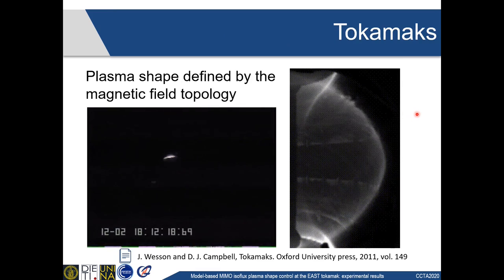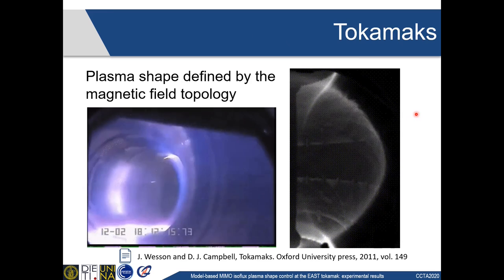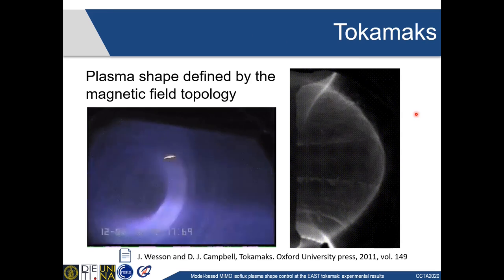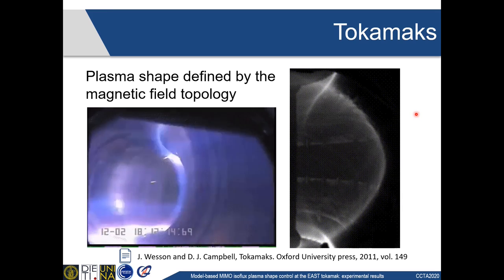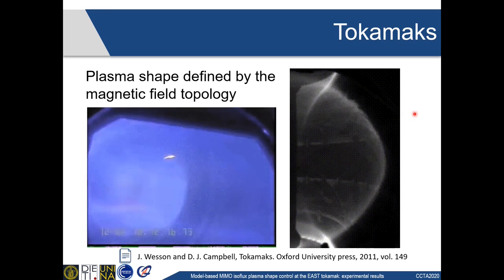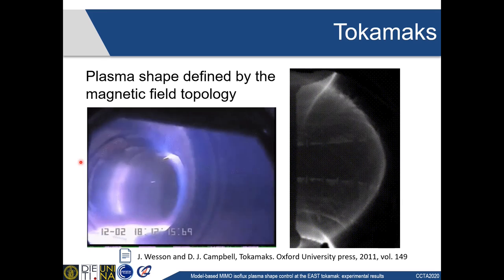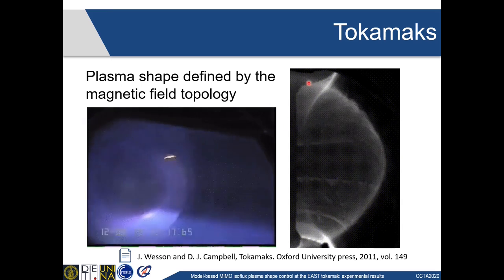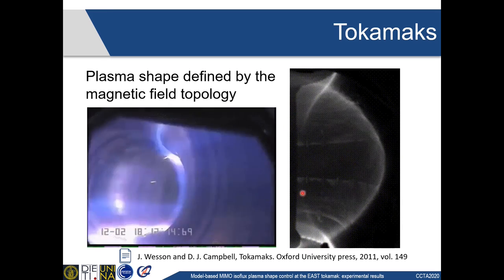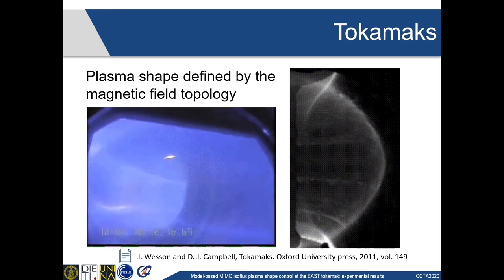In this slide, you can see two animations representing two real-world tokamak discharges that are picked from the internet just to show some examples of these concepts. In particular, on the left, you can see a limiter plasma taken from Tore Supra, while on the right, you can clearly identify the plasma boundary for a double null-diverted configuration.